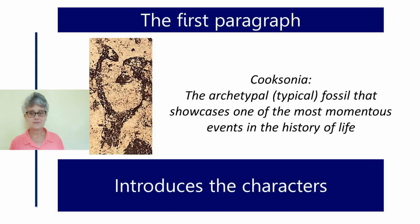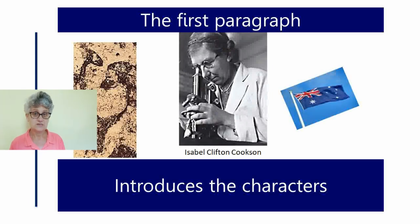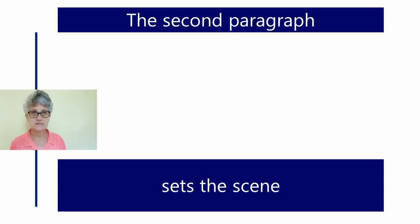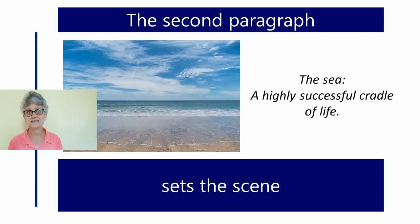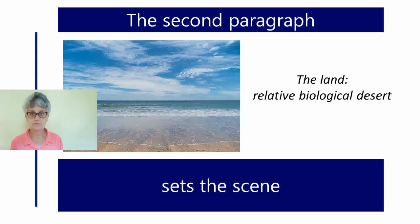Also in the first paragraph, they tell us that Cooksonia was named after Isabel Clifton Cookson, an Australian paleobiologist who probably has a very interesting story herself, but we're not going to talk about it here. The second paragraph sets the scene. At the time Cooksonia was evolving and joining the fossil record, the sea was a highly successful cradle of life — lots of diverse plants and animals. But the land, Taylor and O'Day say, was a relative biological desert, with some evidence of lichen but nothing like we recognize today.